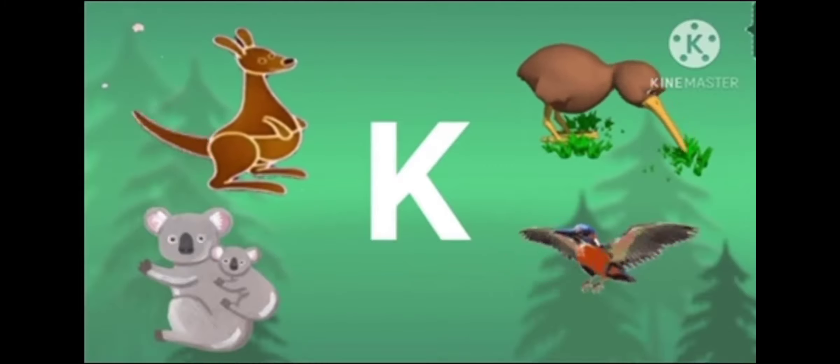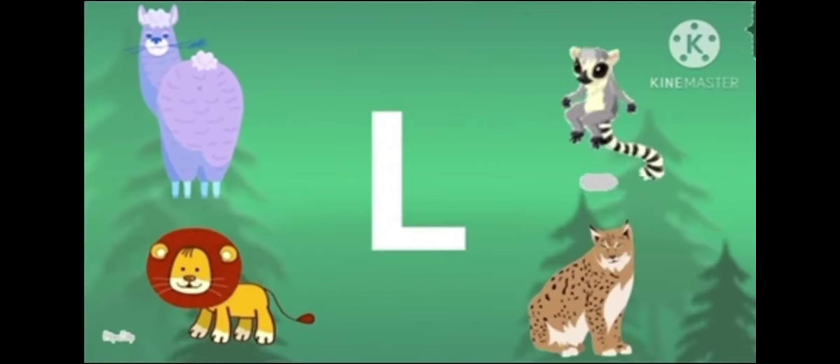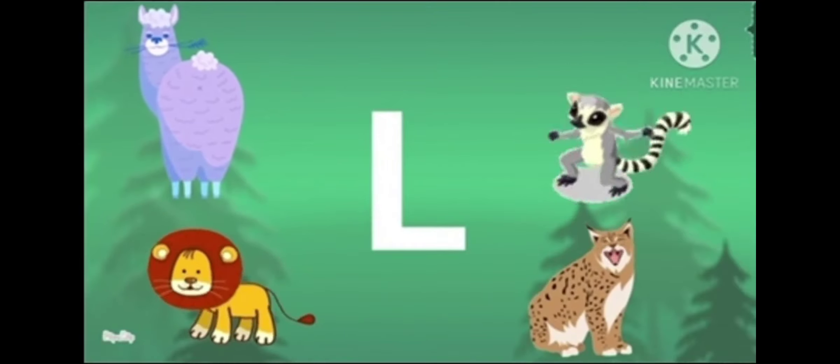K is for kangaroo, koala and kiwi. K is for kingfisher, the pretty river bird. L is for llama, lemur and lion. L is for lynx, who has a short tail.